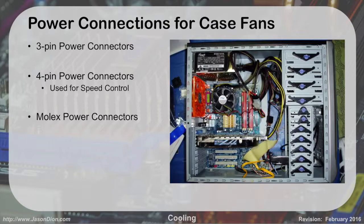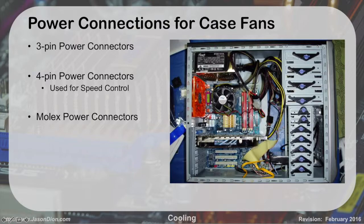There are different types of connectors for case fans. We have the three-pin power connectors. We have the four-pin power connectors, which give you a fourth pin for speed control — most newer fans have four pins because they speed up or slow down depending on heat levels in the case. Or the old style is that Molex connector. You can see the processor fan sucking heat upward and the rear case fan sucking heat outward of the case.